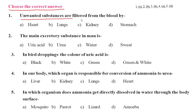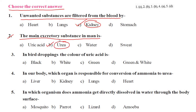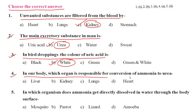Now let us look at the choose-the-correct-answer section. First question: unwanted substances are filtered from the body by — this is a very important question. Second question: the main excretory substance in humans is — and which organ is responsible for the conversion of ammonia to urea?